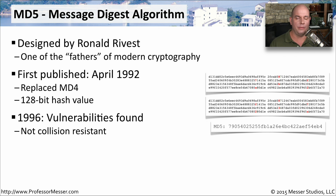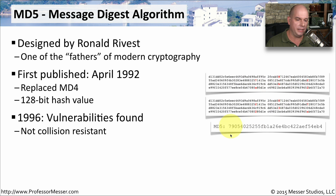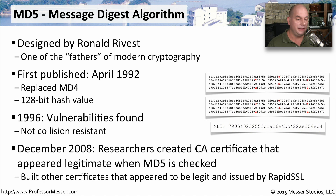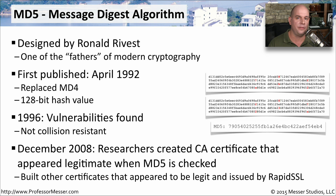However, in 1996, vulnerabilities were found with MD5 where collisions were identified. This is a good example of this — we have two individual pieces of information, the red marks show the things that are different between them, and even with all of those differences, the MD5 hash turned out to be exactly the same. In December of 2008, researchers were able to create a certificate authority certificate that looked absolutely legitimate if you compared it based on the MD5 hashes. This caused many people to decide that MD5 would not be appropriate for use with certificates, and that some other hashing algorithm would be a better choice.